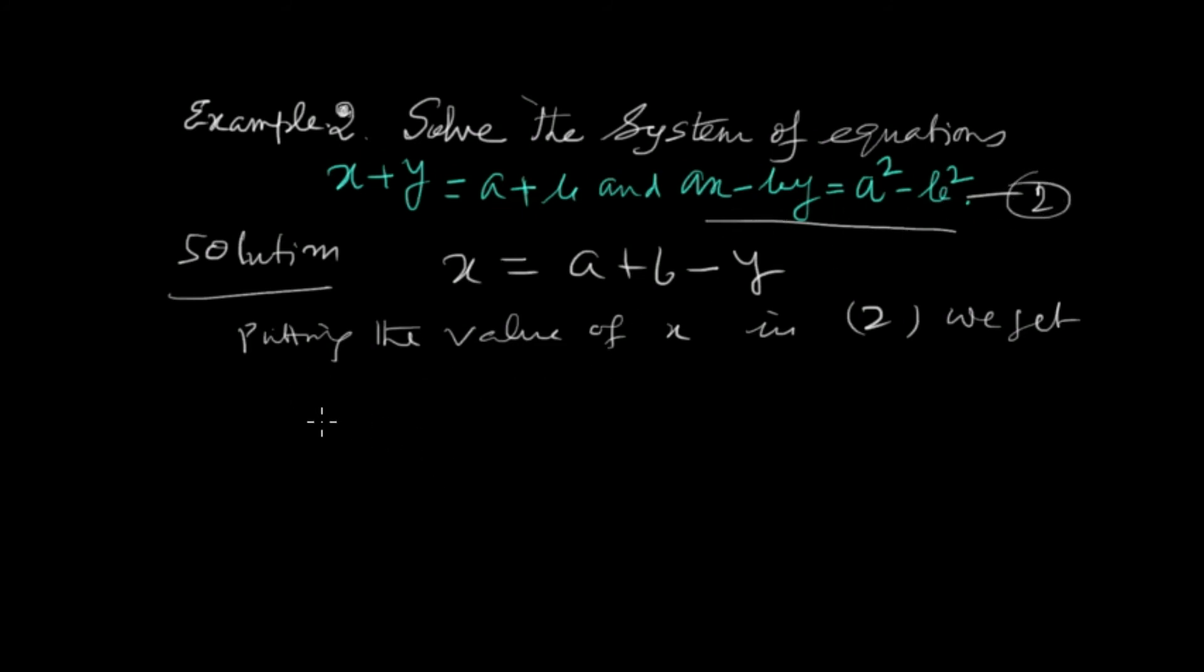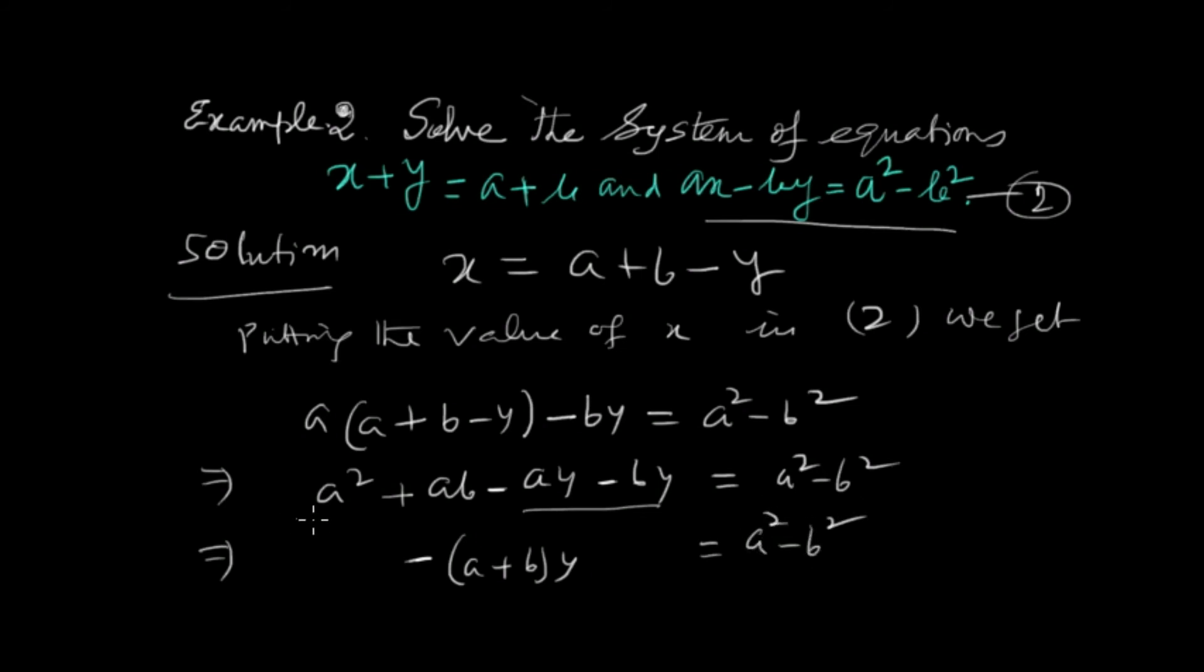This is our equation 2: a times bracket a plus b minus y, close bracket, minus by equals a squared minus b squared. So a squared plus ab minus ay minus by equals a squared minus b squared.